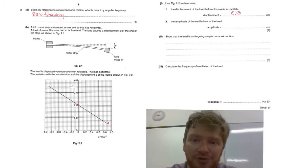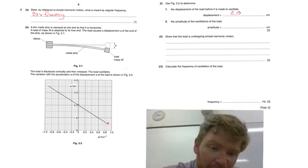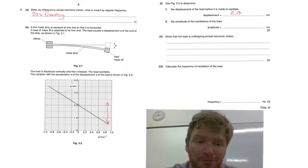And then find the amplitude of the oscillations of the load. Well, the amplitude will be this distance here. It will be the difference between the maximum displacement and the equilibrium displacement. So that will be 1.5 centimeters. So the load is undergoing simple harmonic motion.